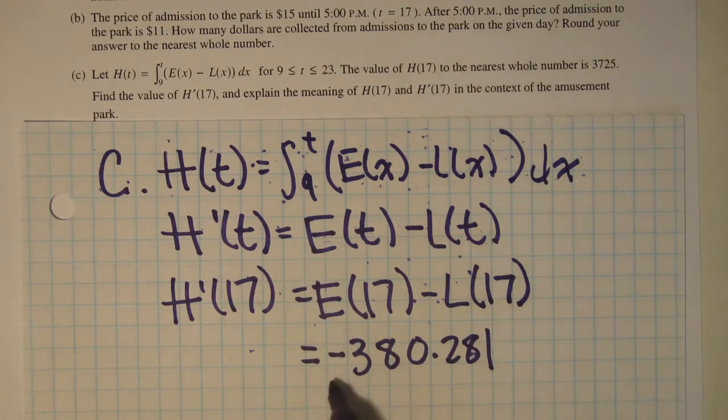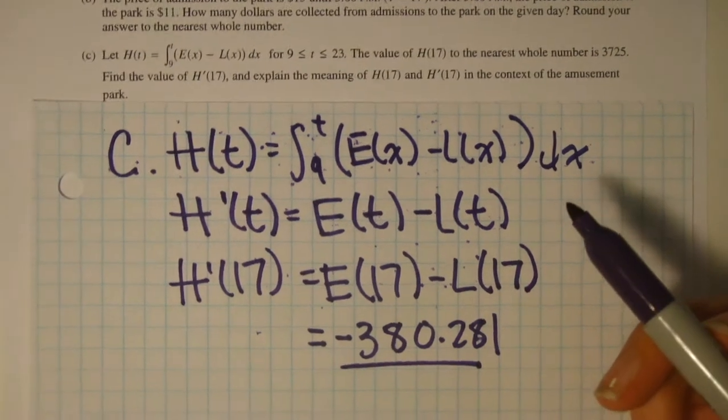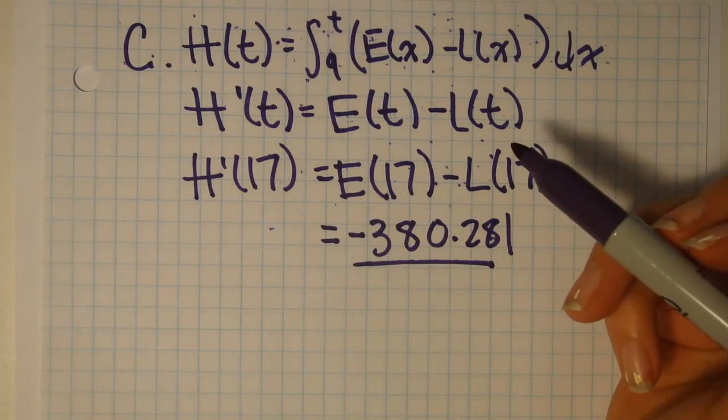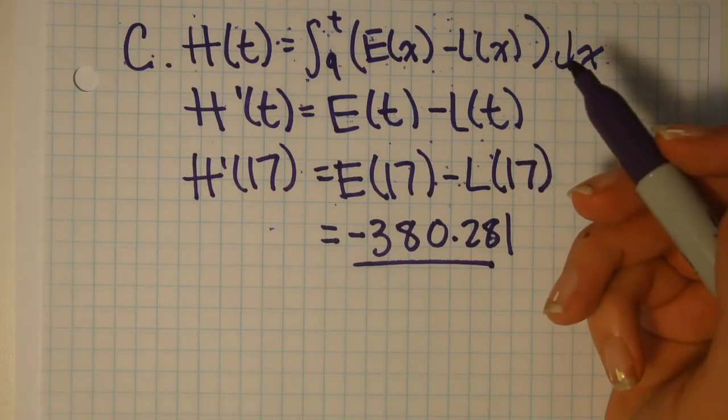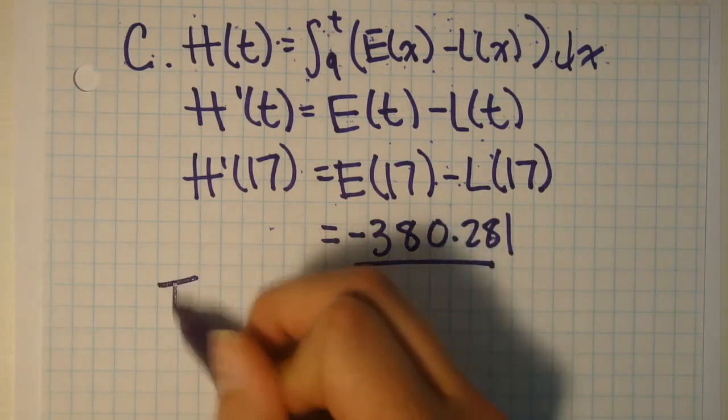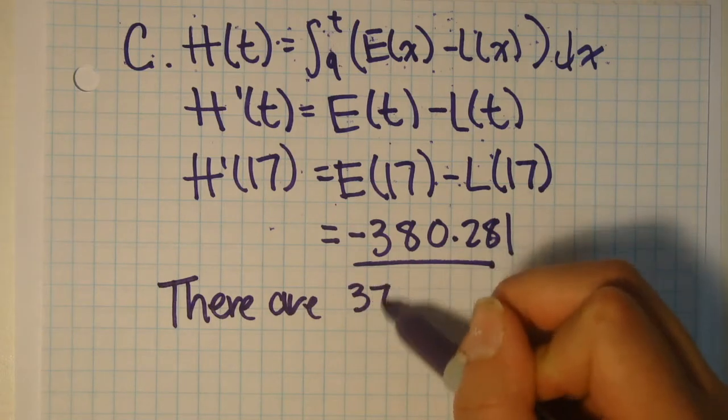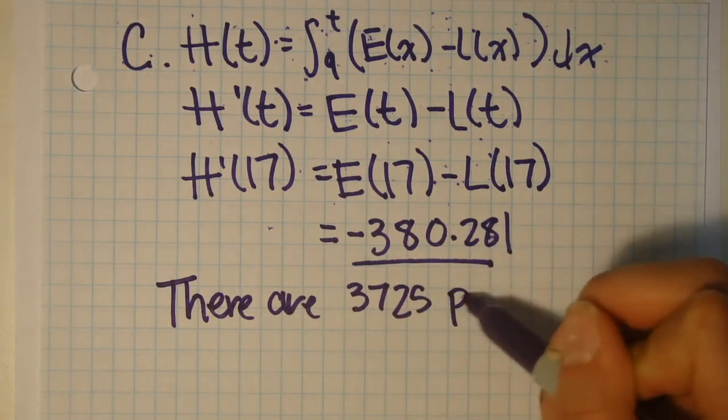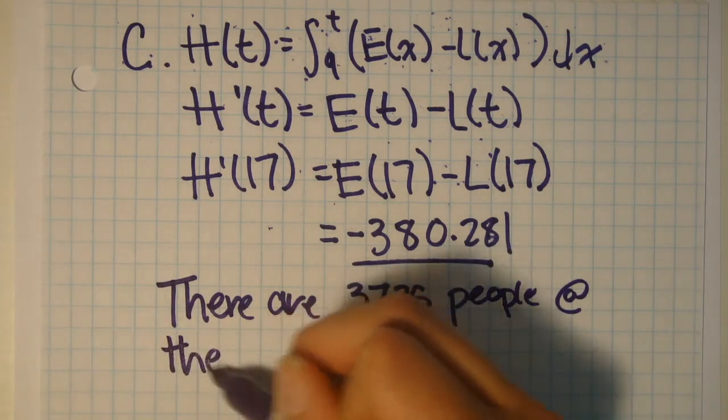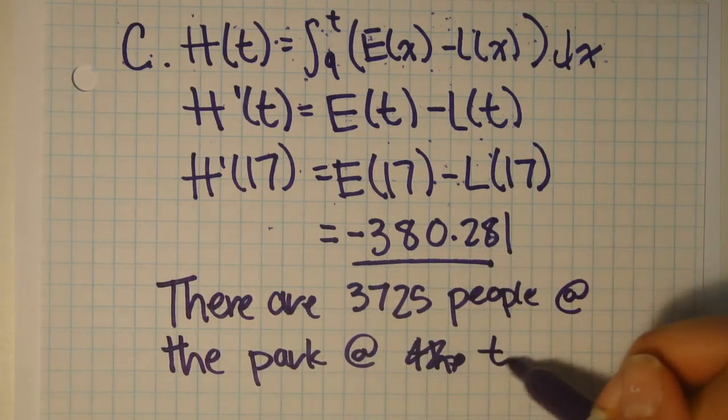And now for the second part, since this is what our h'(17) equals, the second part asks for the meaning. So for the meanings, it gives us that h(17) is 3725. So we could say that there are 3,725 people at the park at t equals 17.